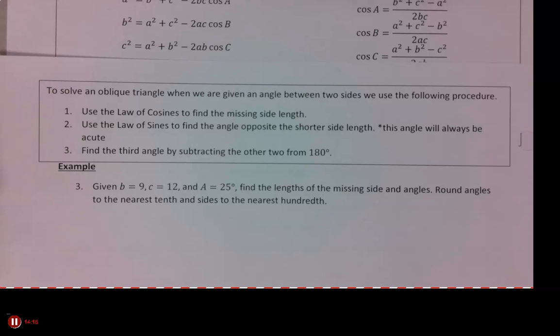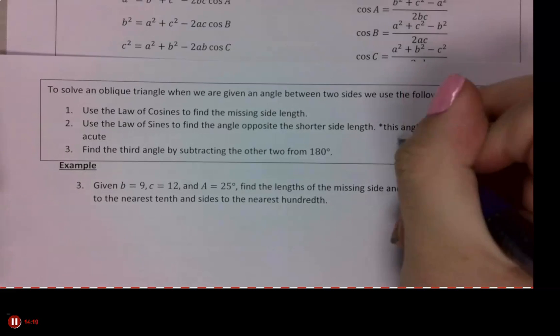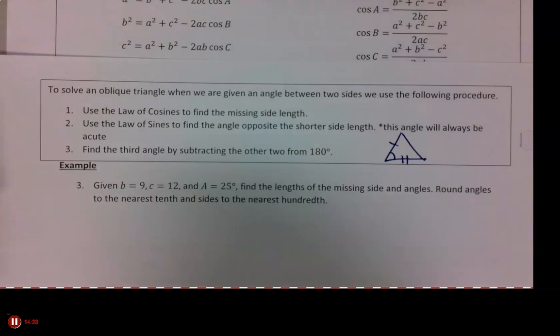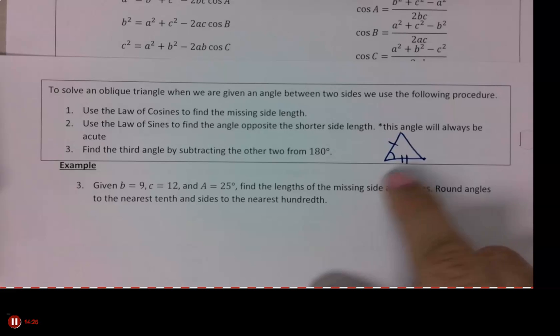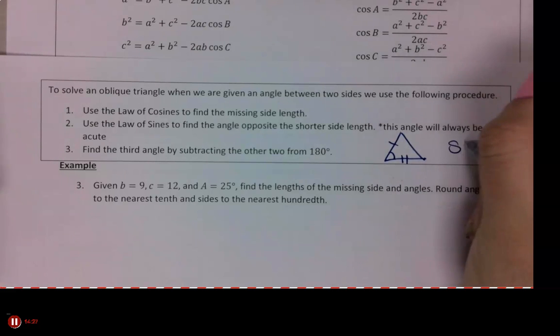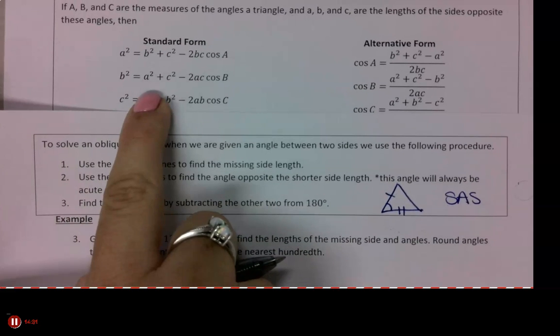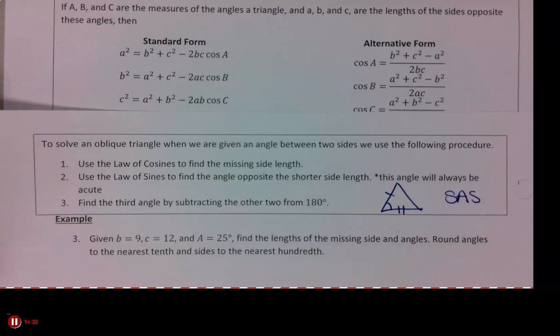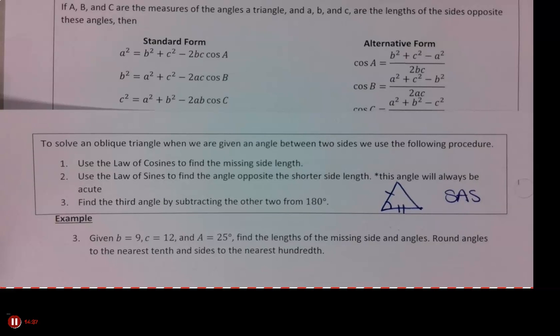Okay, so then the other case we can use law of cosines for is when I have an angle in between two sides. So this is something where I have a side, an angle in between, and then another side. This is side angle side. And for this one, I will be using the standard form. So for these, you use law of cosines to find the missing side length. So you'll be given an angle, and you use that angle to find the side across from it.